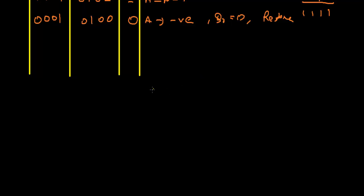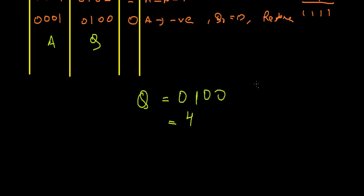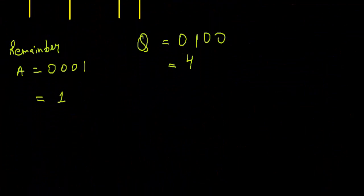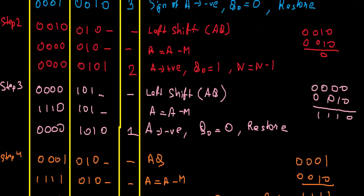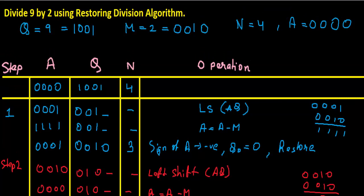Since N has reached 0, the value in Q — which is 0 1 0 0 — is the quotient, and the value in A is the remainder. Converting Q to decimal gives 4, and the remainder A equals 0 0 0 1, which is 1. So 9 divided by 2 gives a quotient of 4 and a remainder of 1, which is correct. That is how you perform division using the restoring division algorithm. If you have any questions, comment below, hit the thumbs up, and subscribe for more videos. Thanks for watching.